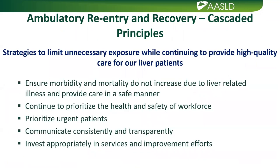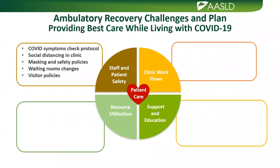Our principles for ambulatory re-entry are: ensure morbidity and mortality for liver patients do not increase and continue to provide care safely; prioritize the health and safety of our workforce; prioritize urgent patients; and communicate consistently and transparently. The first step is ensuring staff and patients feel safe returning. We have COVID symptom checks for all health employees coming to UCSF, symptom screening at all clinic entrances, social distancing in place, universal masking policy, and updated visitor policy.